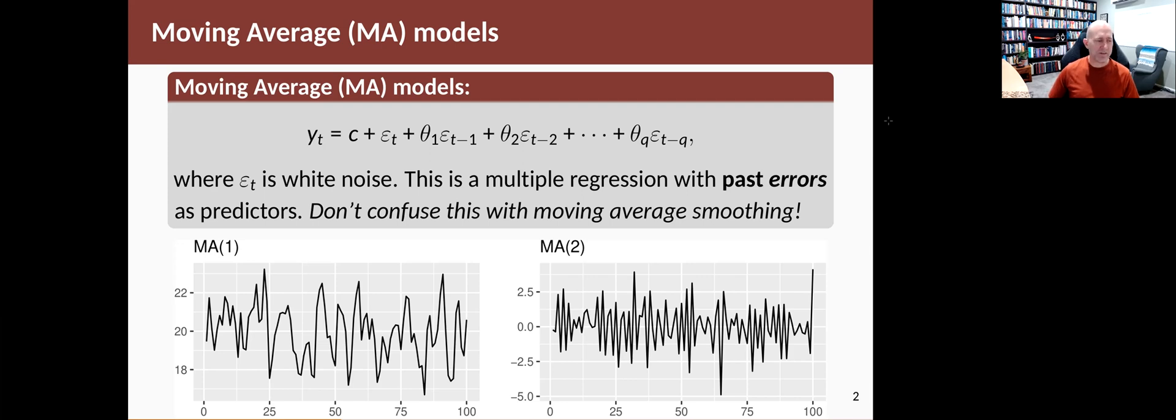And just like autoregressive models, you can get a relatively rich array of dynamics in the series that you can get from a moving average model. Here's an example with the moving average of order one—Q equals one. And the one on the right is a moving average of order two, Q equals two.